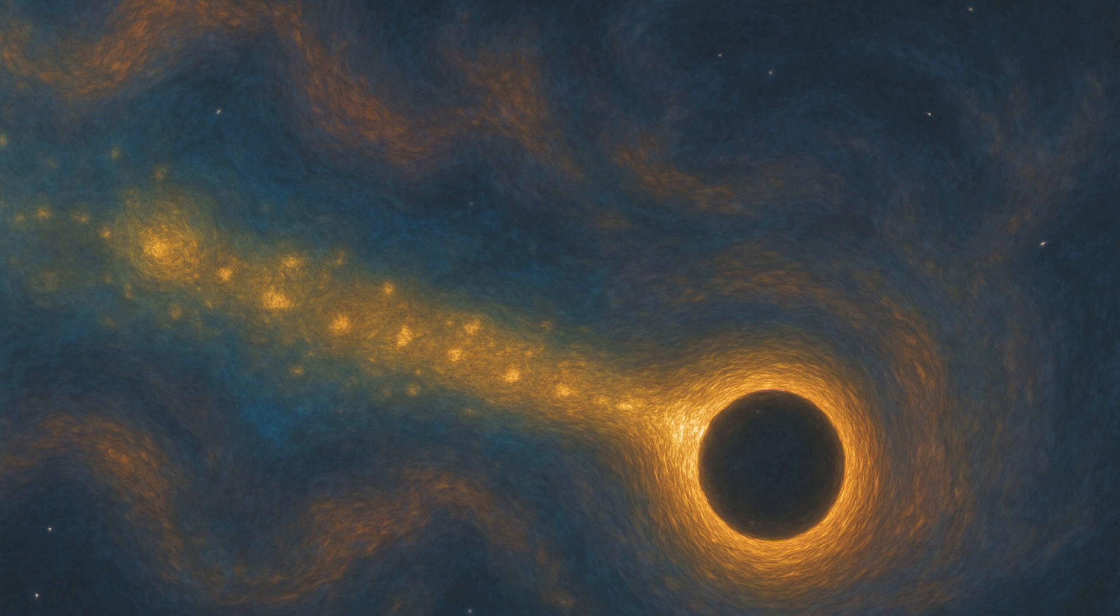The black hole is huge. It has a mass equivalent to around 20 million suns and is traveling at such a breakneck speed that it can cover the 382,500 kilometers distance between our planet Earth and its moon in just 14 minutes.